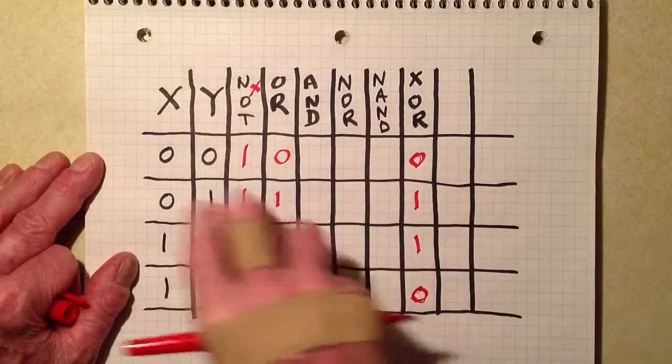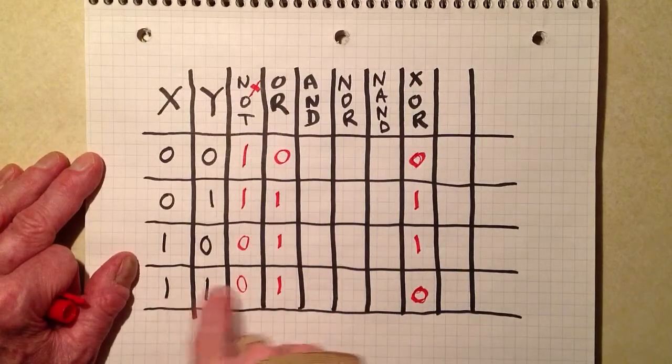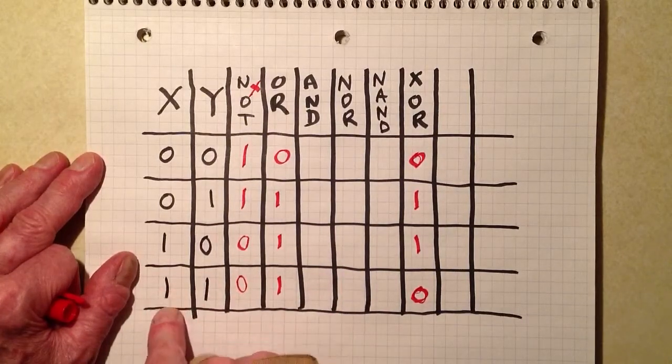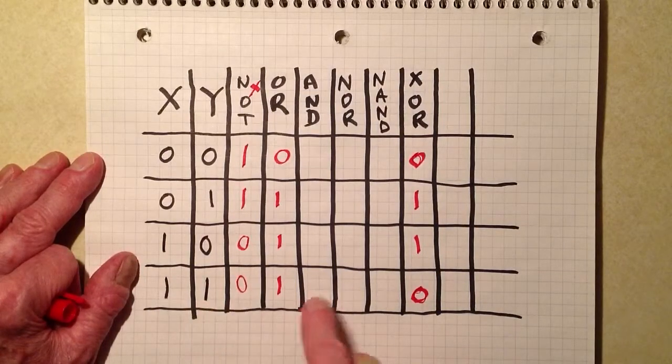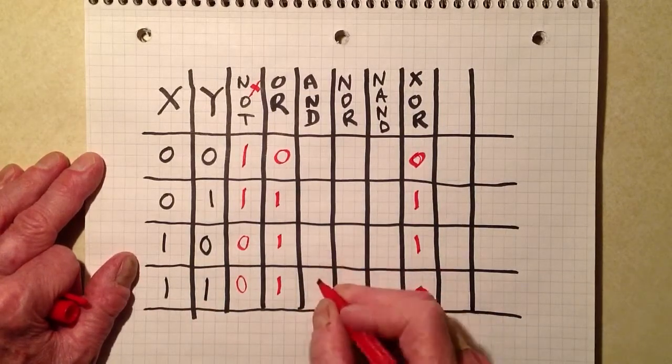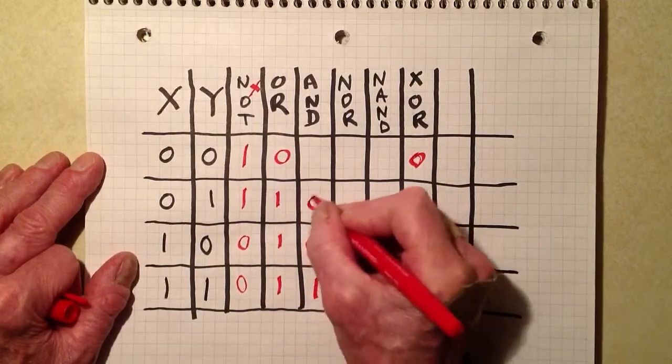The AND, they must both be true or high, truth or falsity. One equals true, zero equals false. They must both be the high state in order to get a high. Otherwise, if either or any of them are low, you get a low.